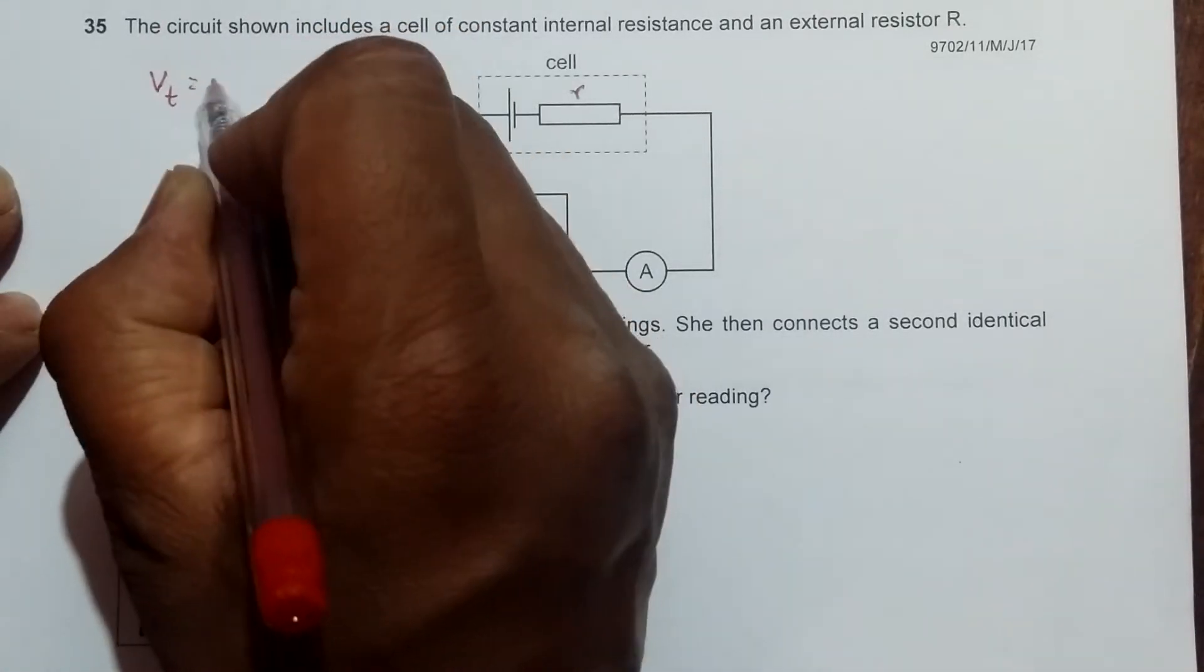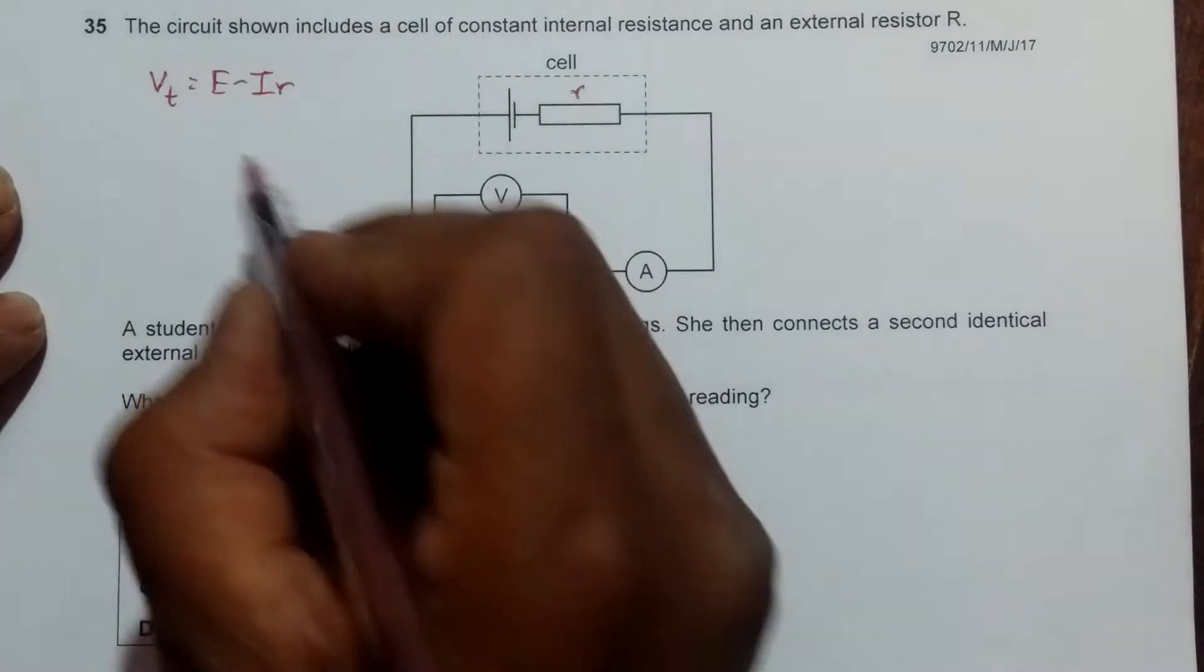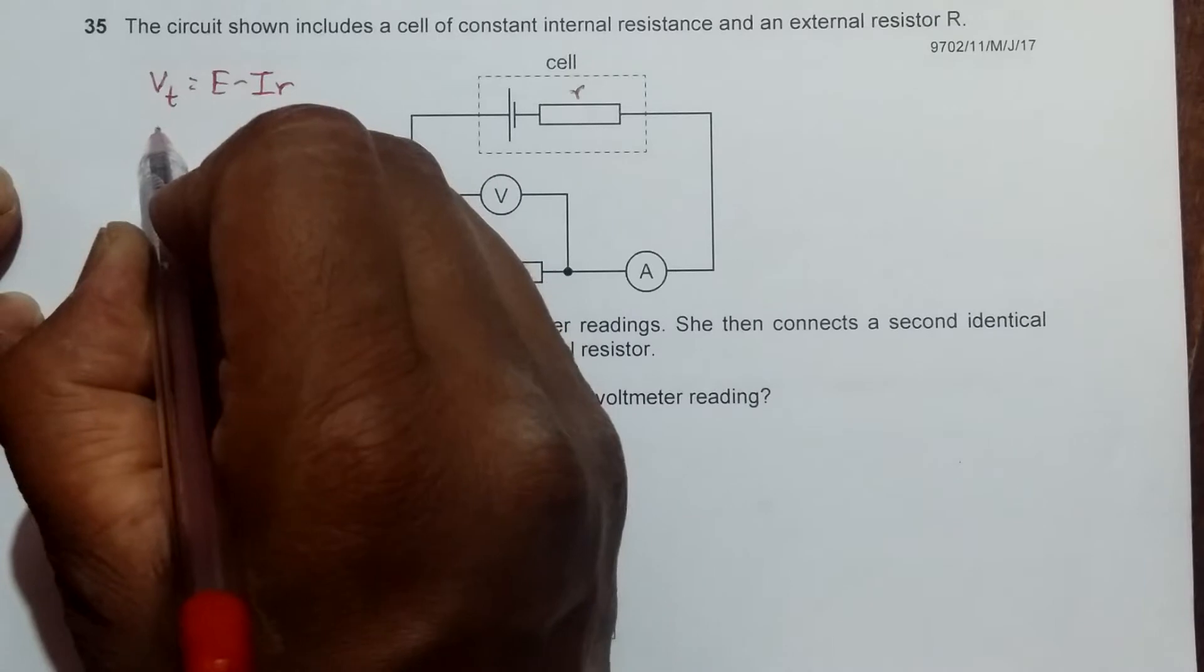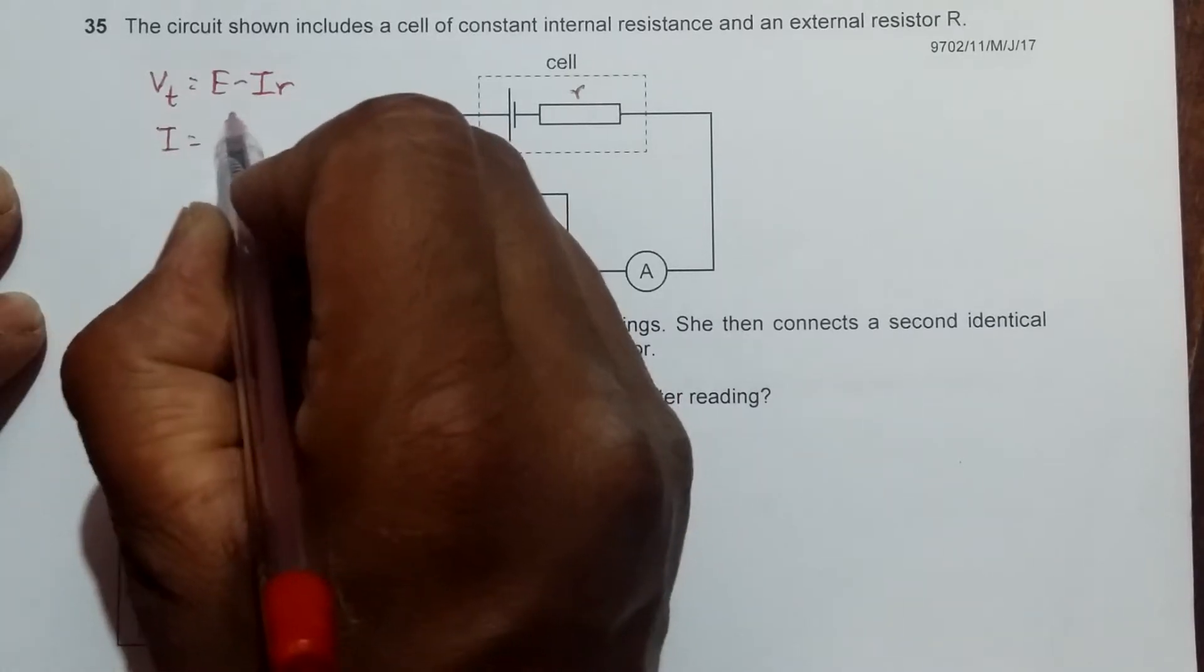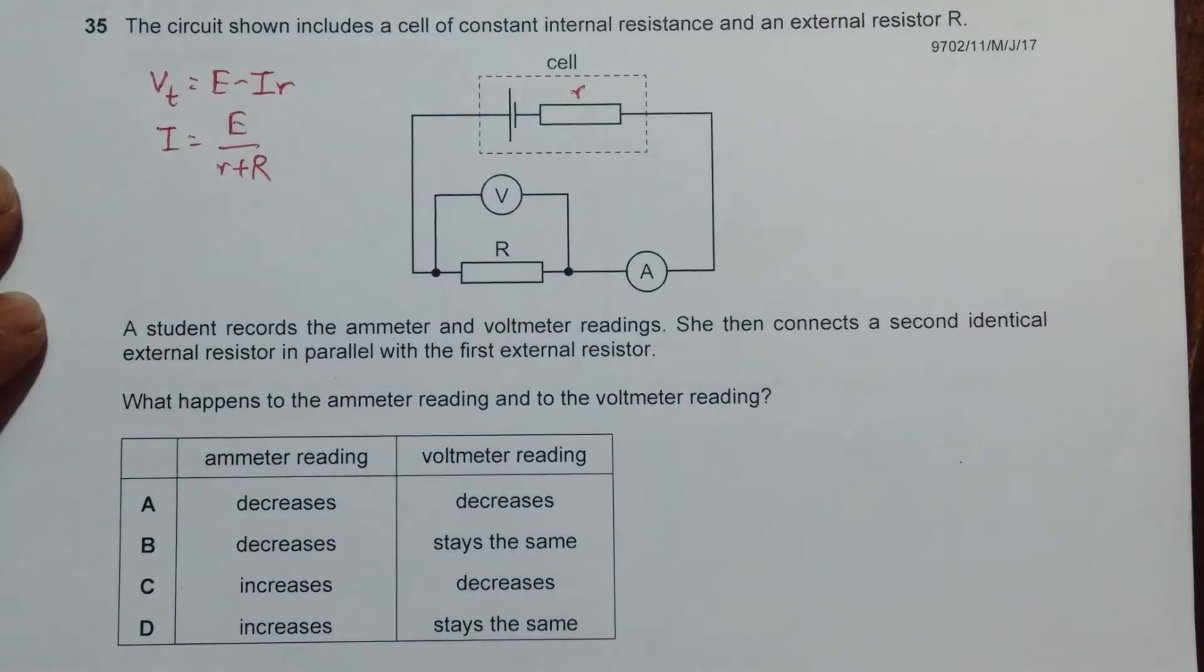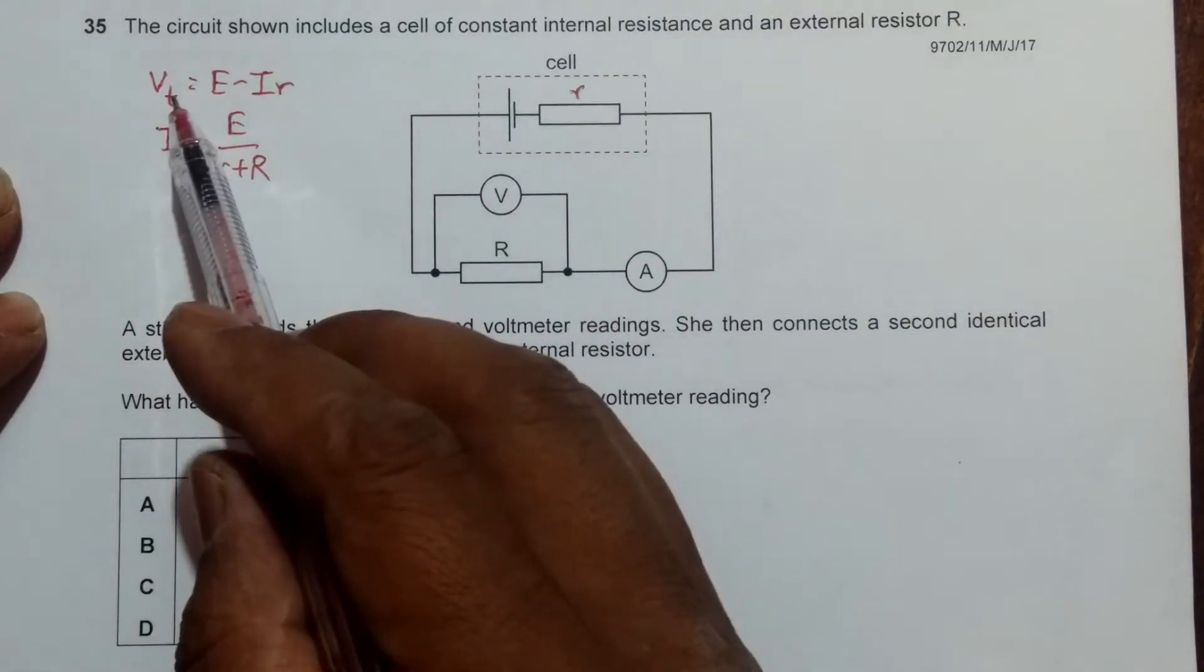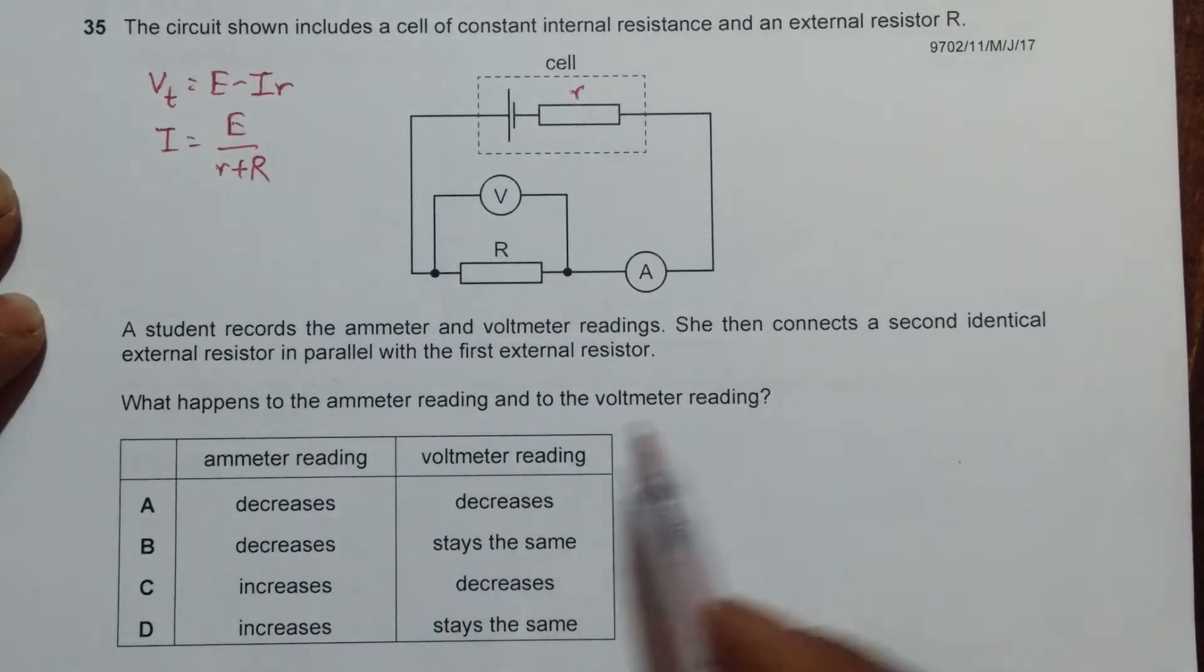The terminal potential difference is equal to E minus Ir, and the current I should be equal to E divided by (small r plus large R). So these are the equations for the current as well as the terminal potential difference.